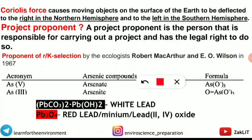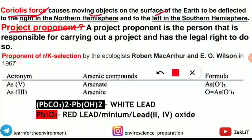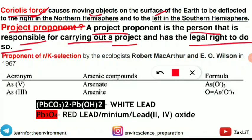Coriolis force is frequently asked. In the Northern Hemisphere, objects on Earth's surface deflect to the right; in the Southern Hemisphere, they deflect to the left. A project proponent is the person responsible for carrying out a project and having the legal right to do so. The proponents of r and K selection theory were Robert MacArthur and E.O. Wilson (1967).